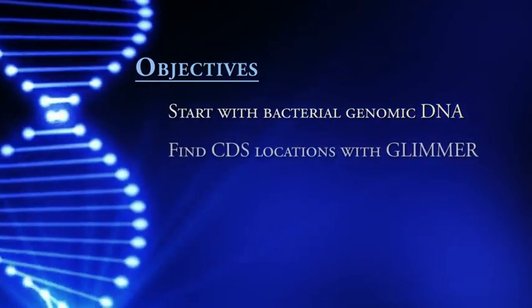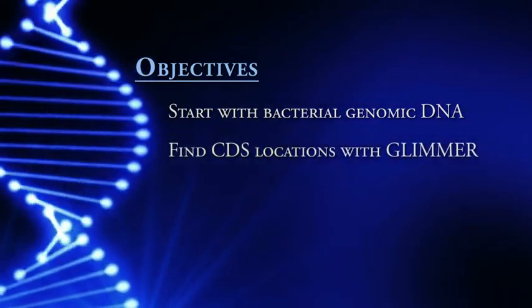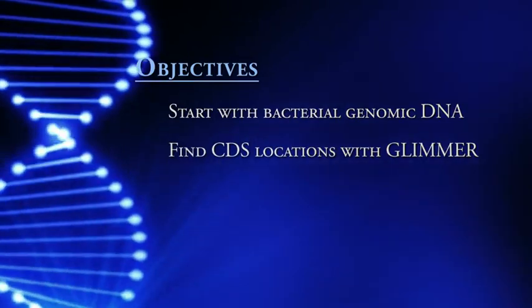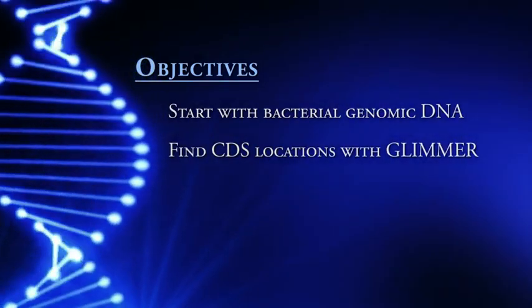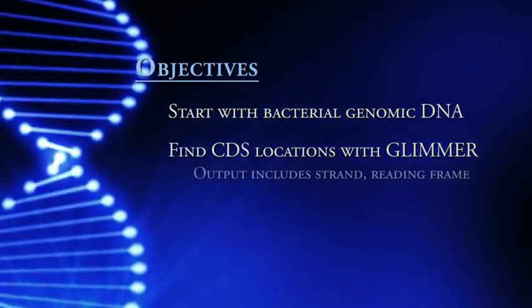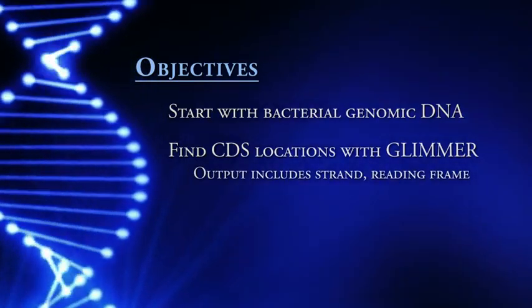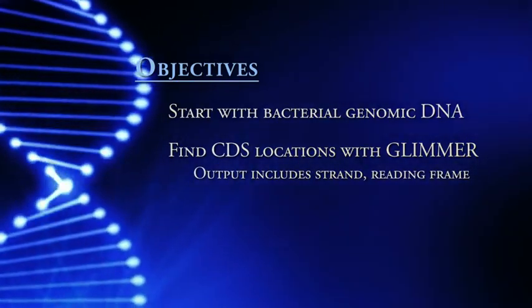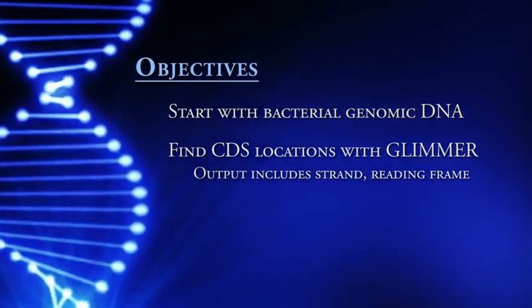Then we will use a program called Glimmer, which will help find the locations of CDSs, or coding regions, within that piece of DNA. The output will include what strand of DNA that particular gene is located on and which reading frame it is on.